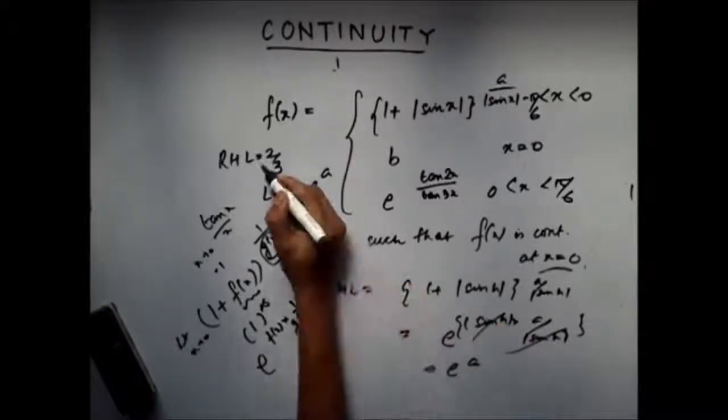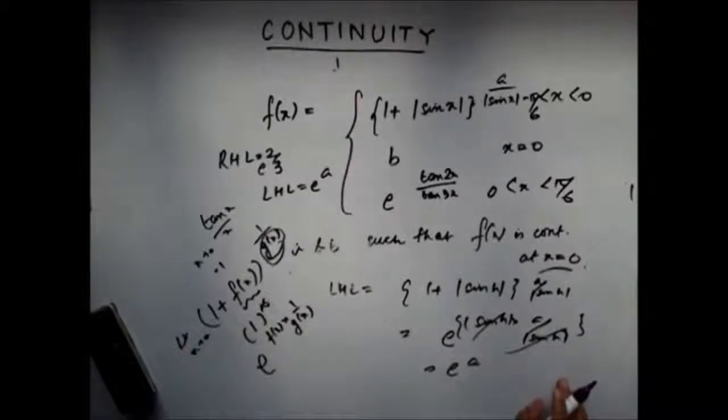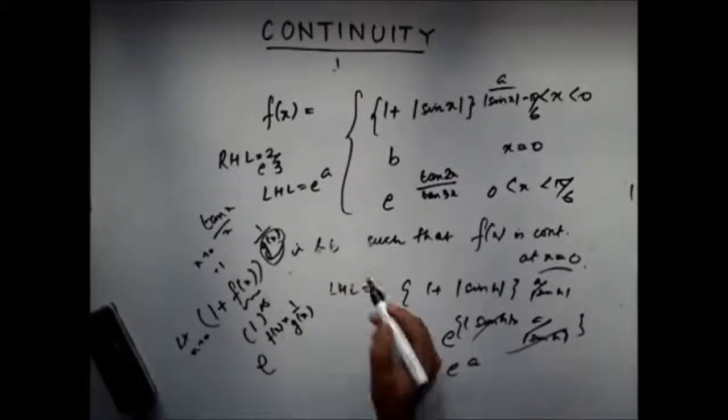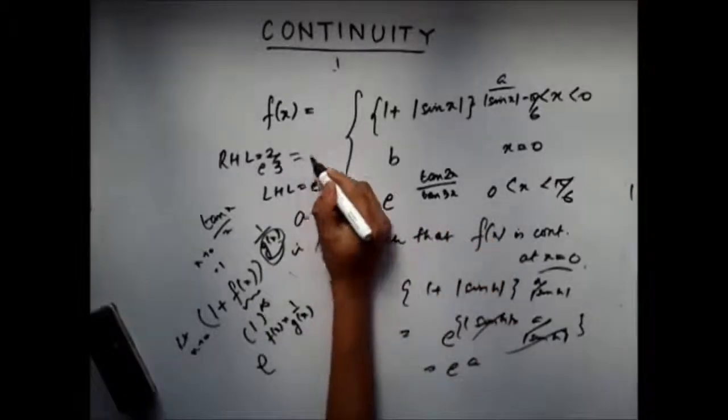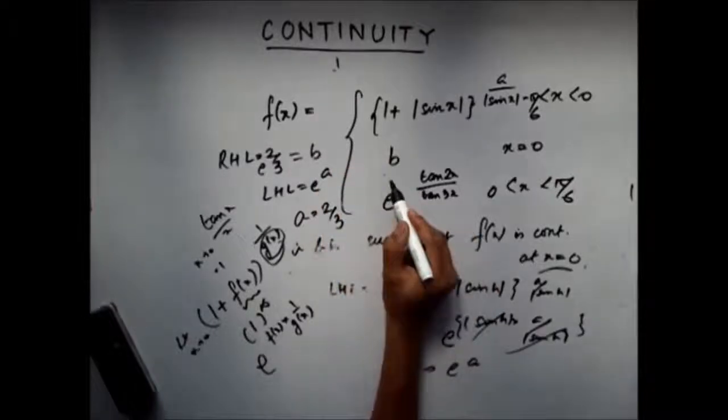The right-hand limit we had seen was e^(2/3). So obviously, from here you can say that a = 2/3, and the right-hand limit and left-hand limit should be equal to b, which is the functional value.